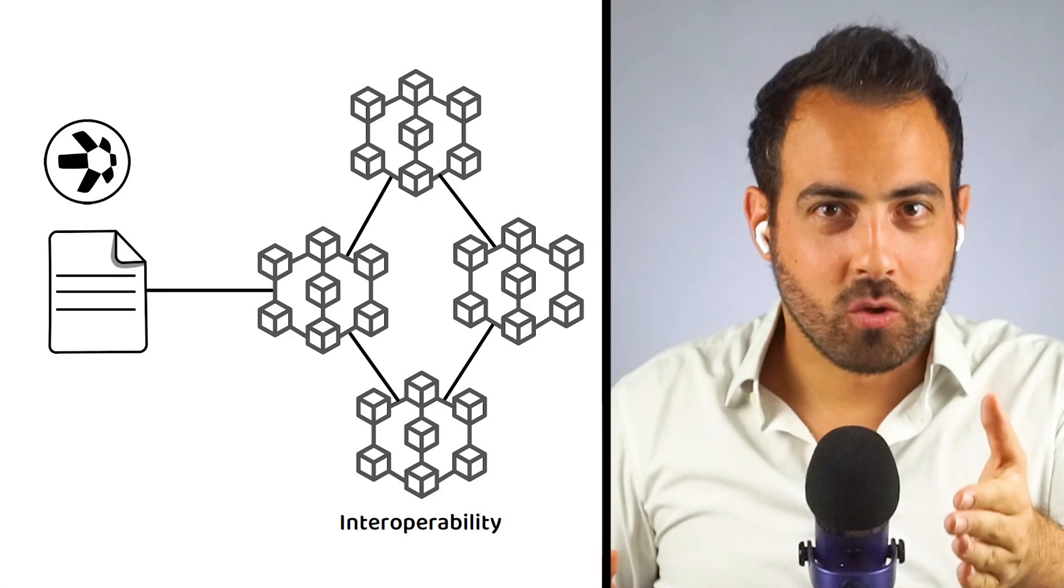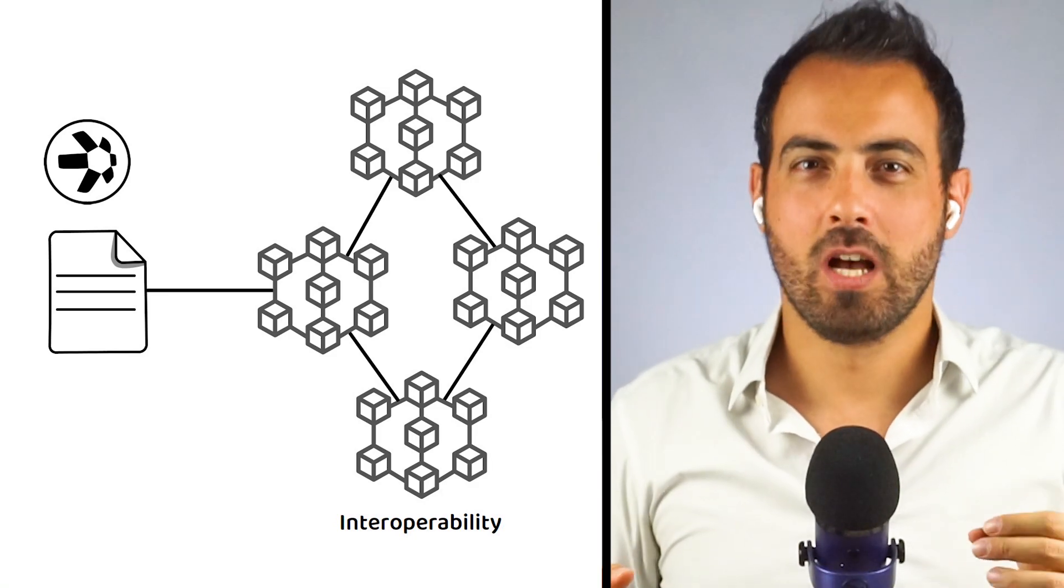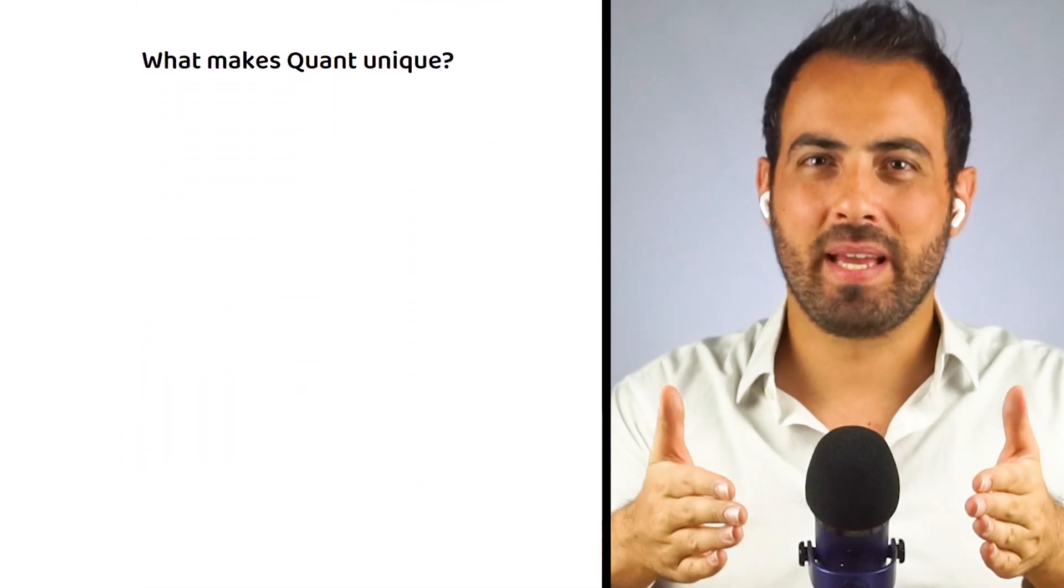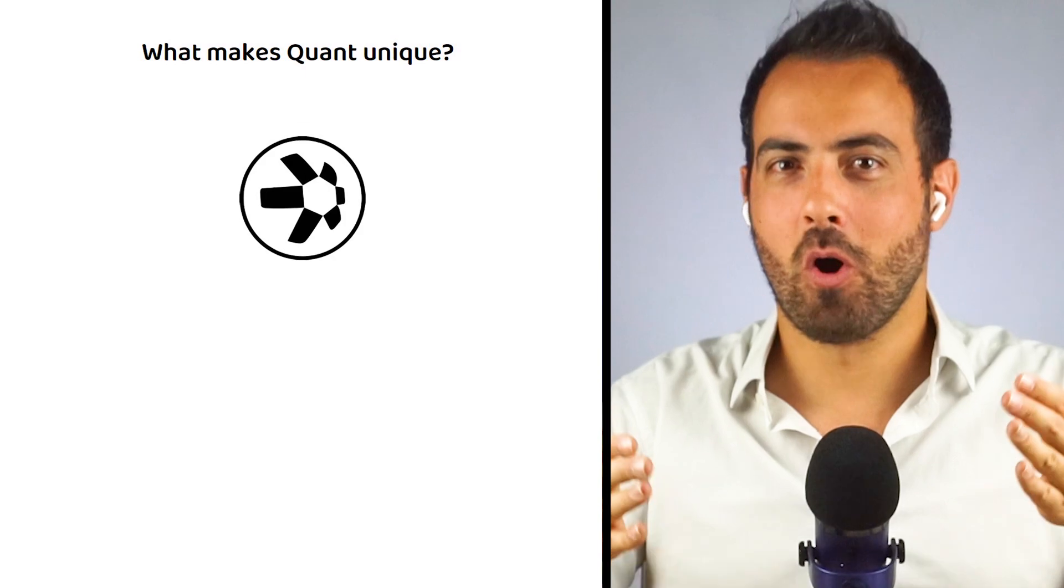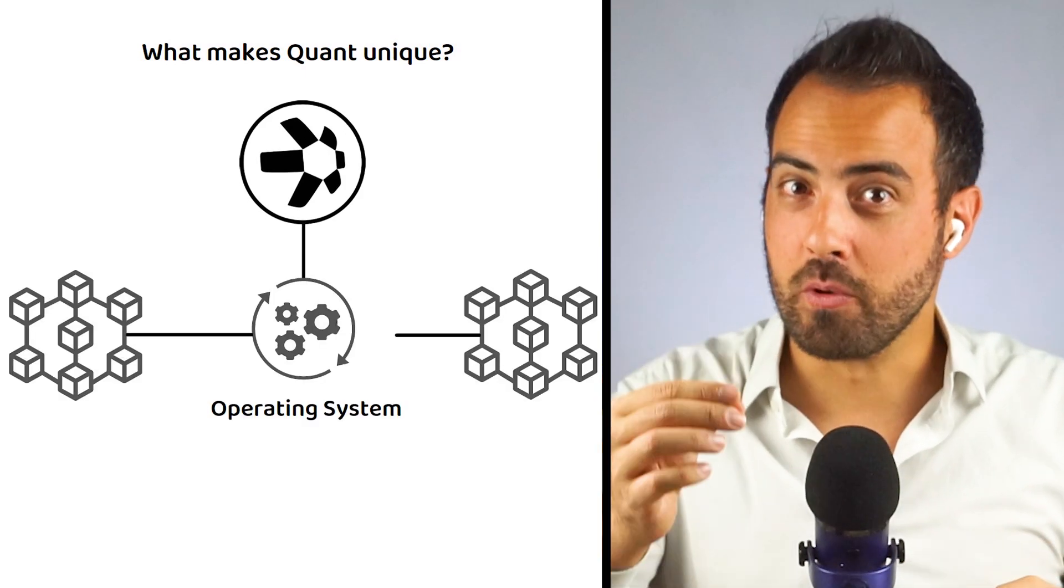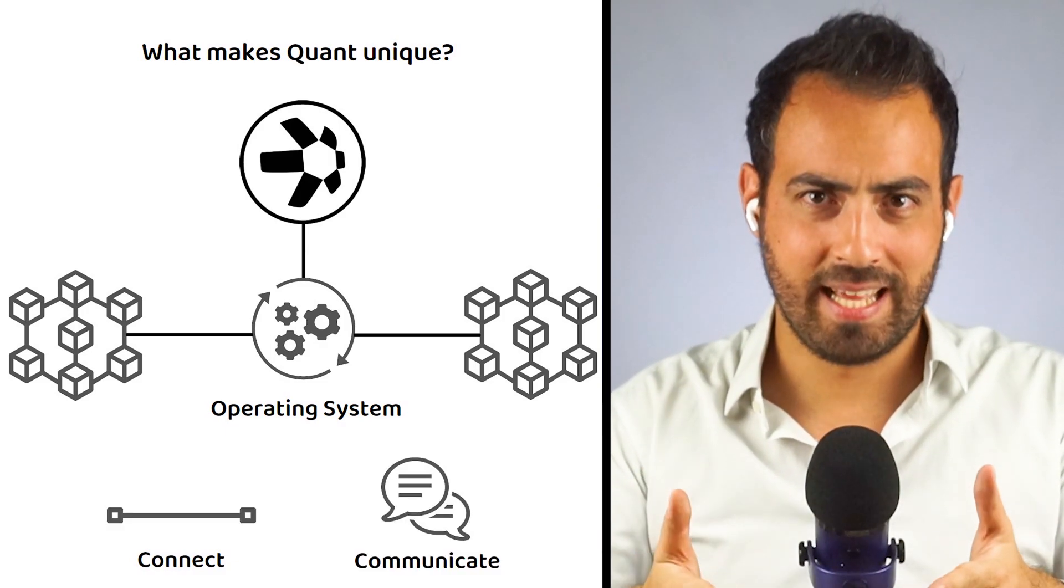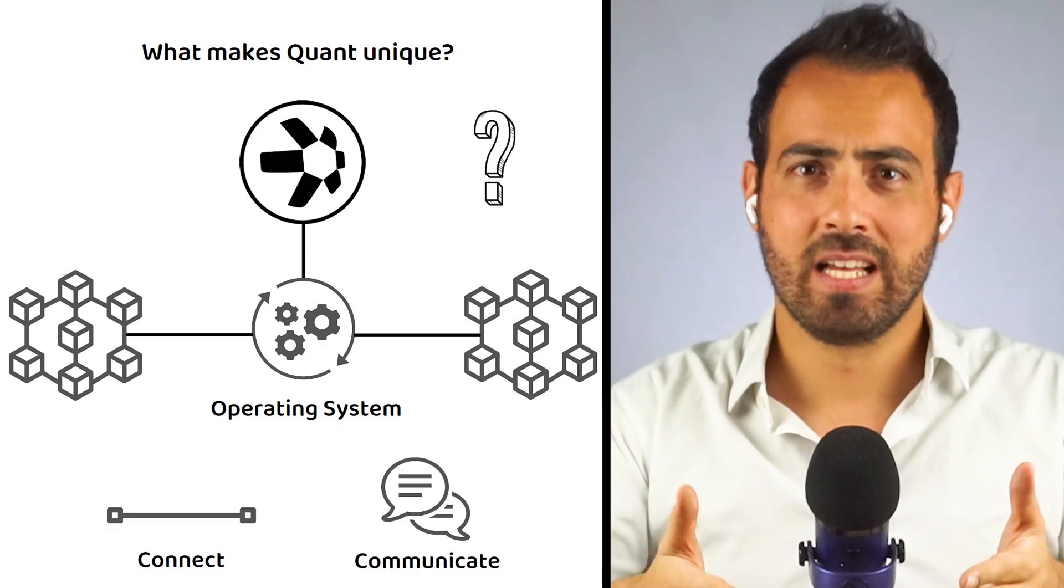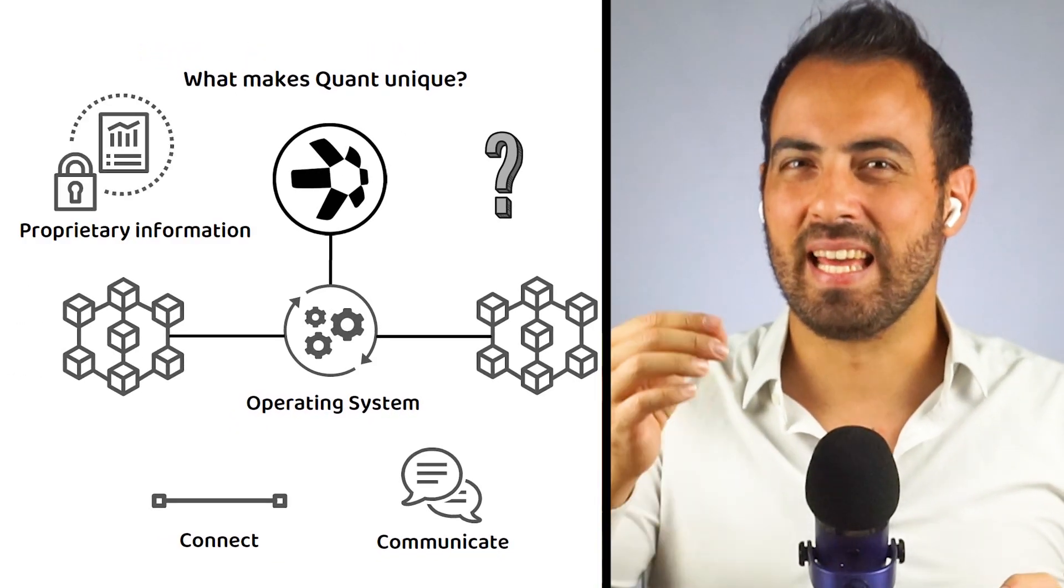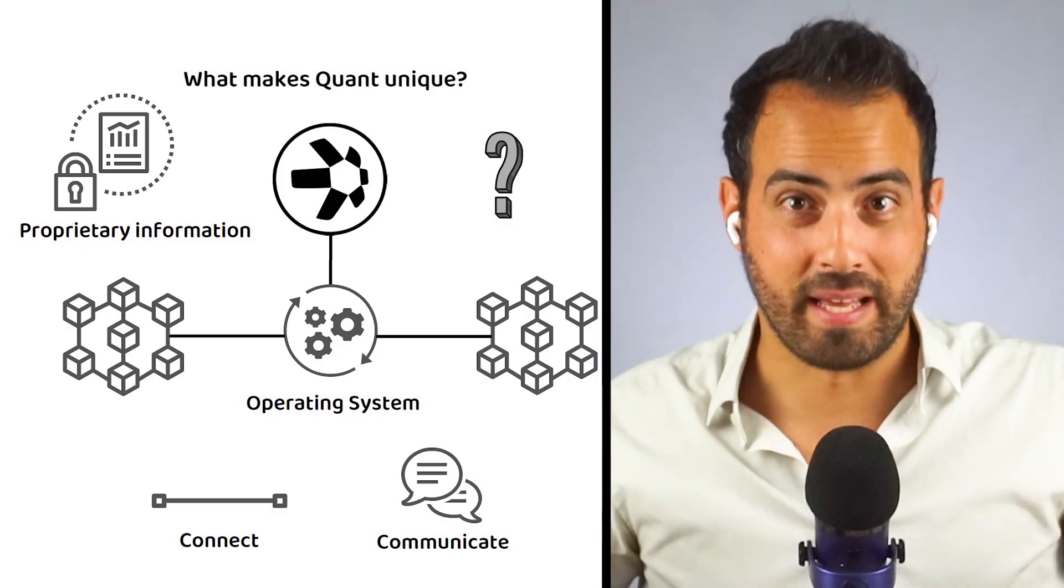Now that we know what Quant is and how it works, let's find out what makes Quant a game changer. Quant is unique because it is the operating system or OS that allows many blockchains to connect and communicate with each other. How this works exactly has not been fully released due to it being proprietary information, meaning it is not based on the work of others, but has been built from the ground up.